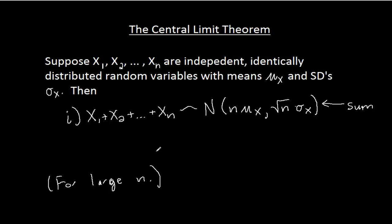then the variance of the sum of the random variables is the sum of the individual variances. But since the standard deviation is the square root of the variance, we end up with the square root of n here.